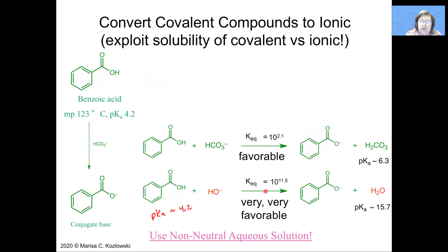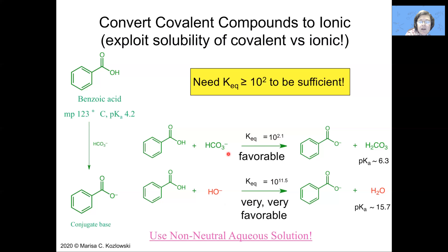This means that if I treat an organic solution of benzoic acid with either sodium bicarbonate or sodium hydroxide, I will deprotonate it and the benzoic acid will move from the organic layer into the aqueous layer. It's important that this equilibrium be fairly favorable to get a good deprotonation — typically 10 to the 2nd is sufficient, but you can get away with equilibrium constants as low as 1. That means half the material will be protonated and half deprotonated, but as chemists we can adjust the quantity of materials: throw in thousands of equivalents of bicarbonate and push the equilibrium to the right.